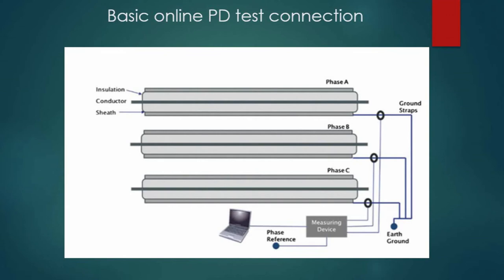Offline PD measurement is performed before installing cables into switchgear or transformers. Online measurement means the cable is loaded and in working condition. In the online setup, we can see the insulation, the conductor in the middle, and the cable sheaths for phases A, B, and C. Three clamps are joined to the three phases, connected to measuring devices, with earthing for the three phases going through the measurement device, and a phase reference connection leading to the PD analyzer.